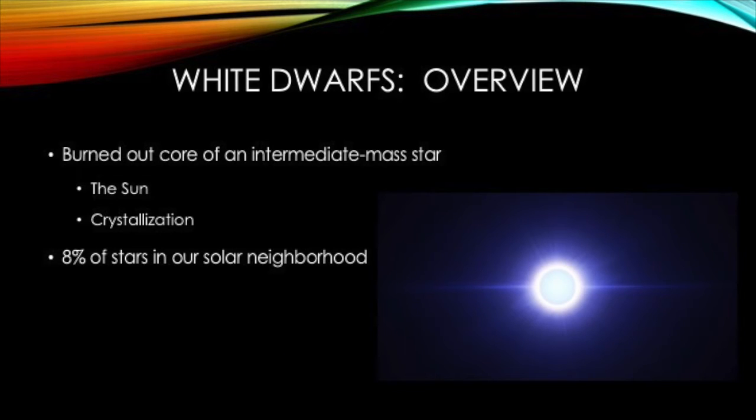A white dwarf is the burned-out core of an intermediate-mass star. After hydrogen fusion has ended, all that is left behind is a hot, dense, and dim carbon-oxygen core. It is predicted that a white dwarf will eventually turn into a large crystal if it is left to cool over the course of billions of years.